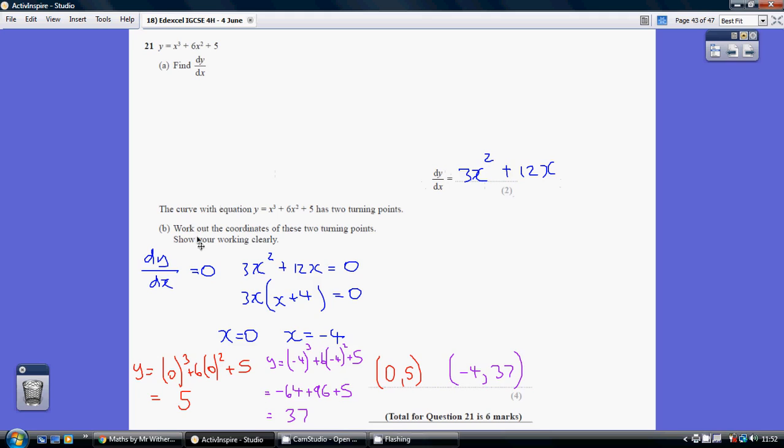Right, part b. The curve with this equation has two turning points. Work out the coordinates of these two turning points, showing your workings clearly. Well, at a turning point, that's where we've either got a maximum or a minimum, the gradient equals 0. And the differential allows us to work out the gradient at any particular point.